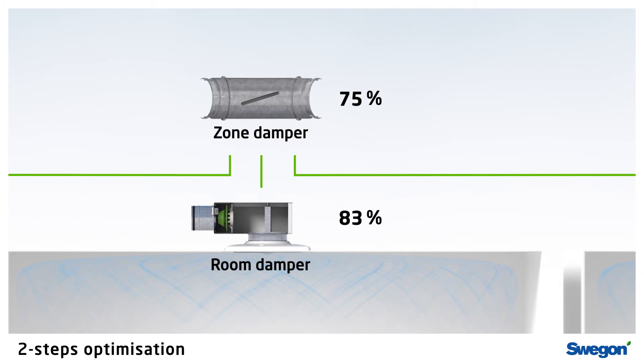the room product closes the damper, and if the room damper is less than 70% open, the zone damper closes accordingly.